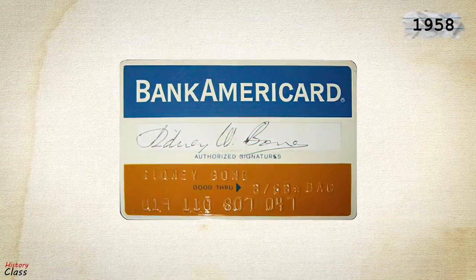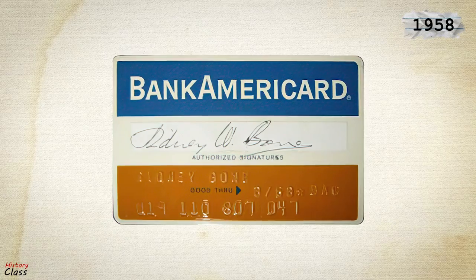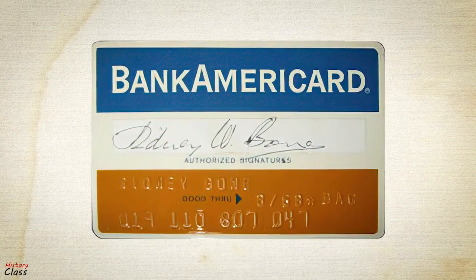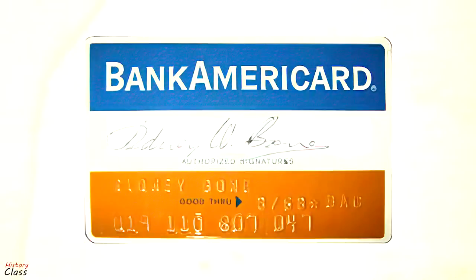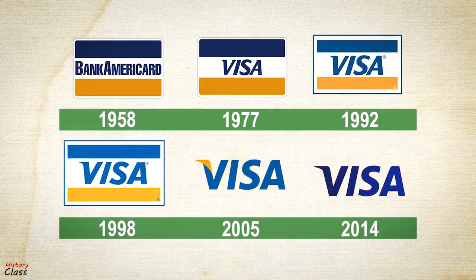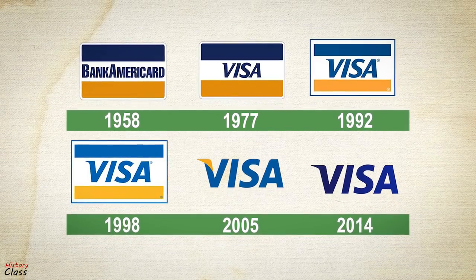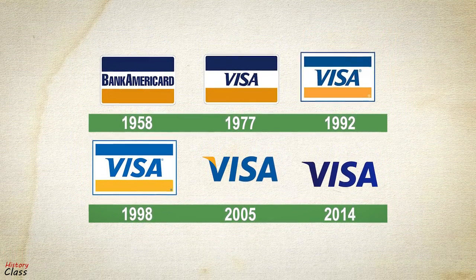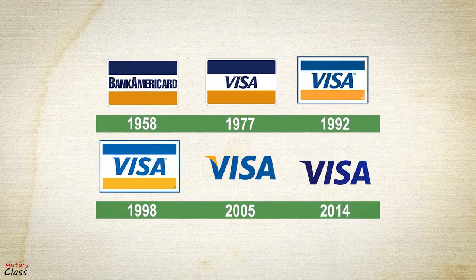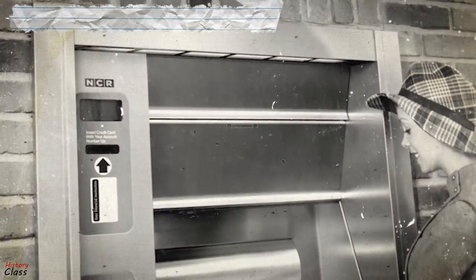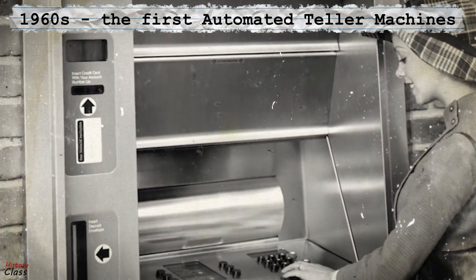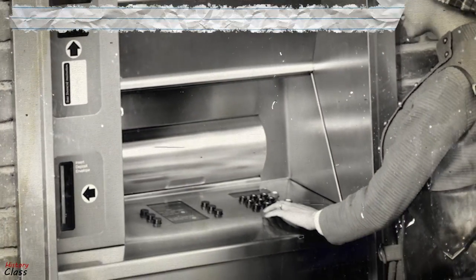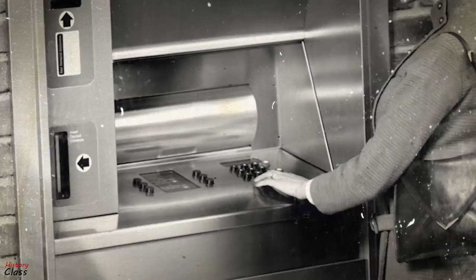In 1958, Bank of America launched the first third-party credit card to acquire widespread use and be accepted in shops and stores all over the United States. In the 1960s, the first automated teller machines, or cash machines, were developed.